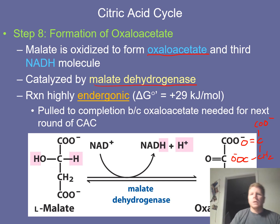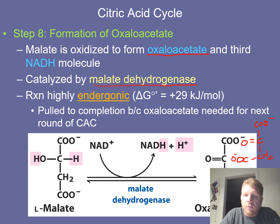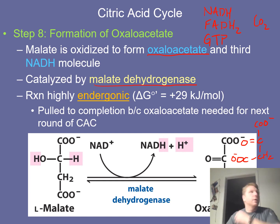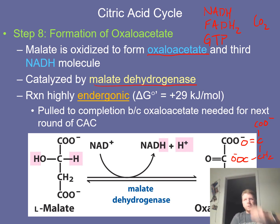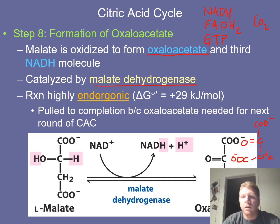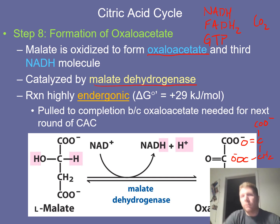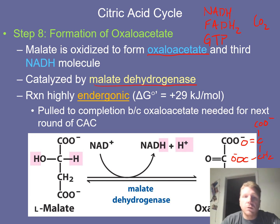Oxaloacetate can then be used to continue this cycle. This is a very endergonic reaction. One of the takeaways for this whole pathway is we generated a ton of products: NADH, FADH2, GTP, and CO2. It's important to keep in mind we're doing this from each pyruvate molecule. There's a lot of NADH, FADH2, and GTP generated by going through the citric acid cycle, and all of that will be used in oxidative phosphorylation.